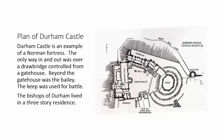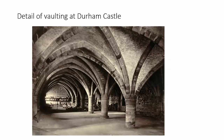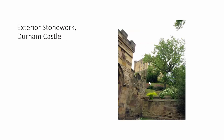Here is Durham Castle, an example of a Norman fortress. The only way in and out is over a drawbridge controlled from a gatehouse, and beyond the gatehouse is a bailey. This diagram gives you your castle vocabulary: here is the keep or donjon, used for battle. The Bishops of Durham lived in a three-story residence. This is a detail of the vaulting at Durham Castle — we have ribbed vaulting, but it's heavy and squat, built for defense.